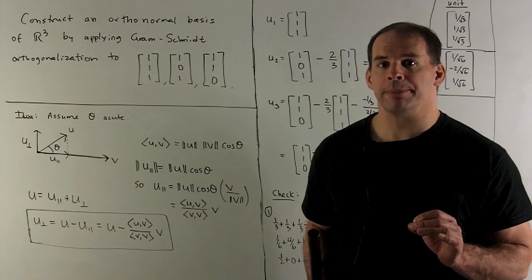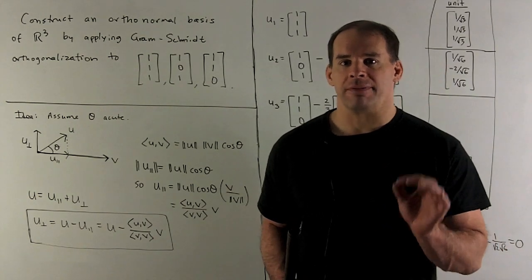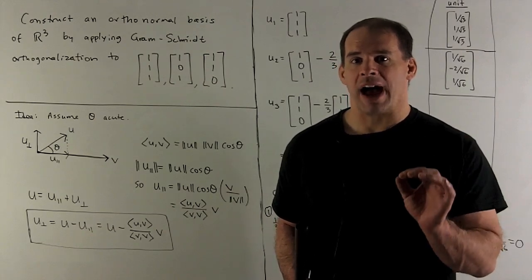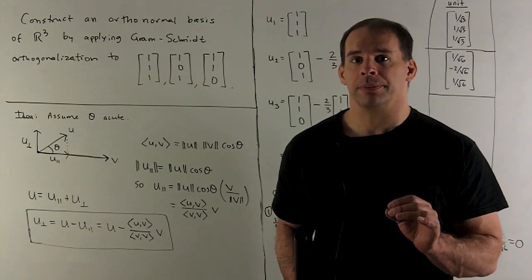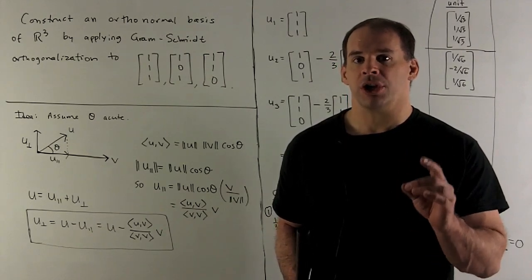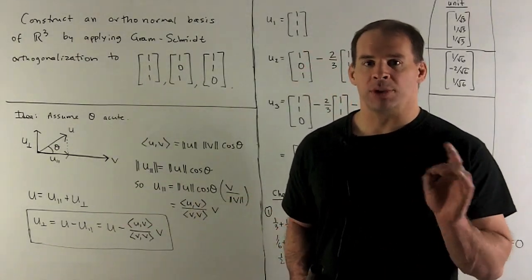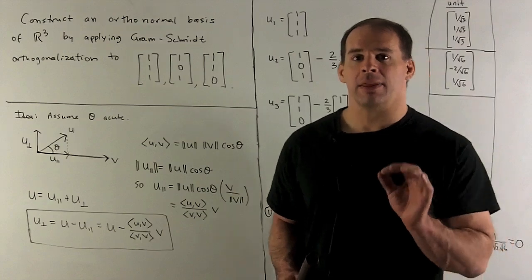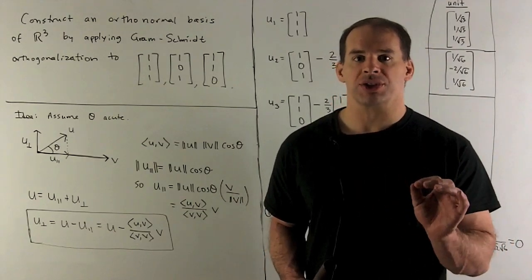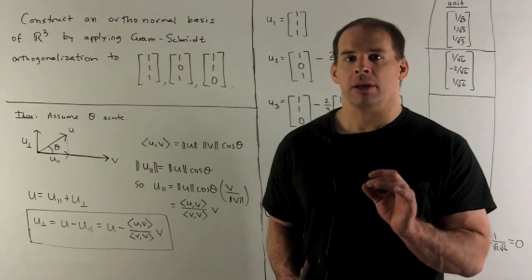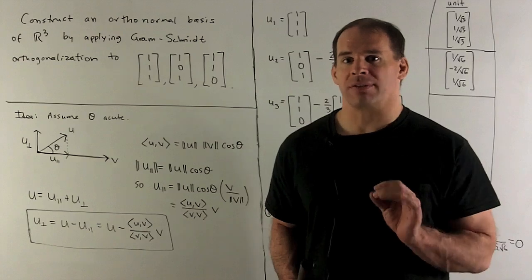Before we apply Gram-Schmidt, let's remind ourselves how to find the part of a vector that's orthogonal to another vector. We draw vectors u and v in the plane. I assume the angle between them is theta, and that theta is between 0 and 90 degrees. We don't need that assumption, but that's enough to remind us of our formula.